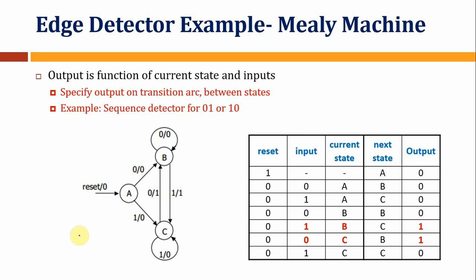If the first input bit is 1, the sequence 1-to-0 starts, so the machine goes to state C with output 0. When a 0 then comes, the 1-to-0 sequence is complete and the negative edge is detected with output 1, going to state B. From state B if another 1 comes, we go to state C. Then if a 0 follows, output is 1, detecting the next sequence.